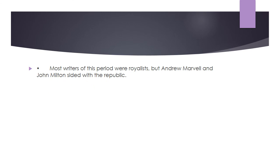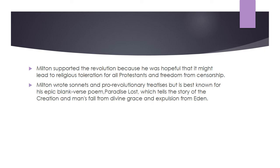Most writers of this period were Royalists, but Andrew Marvell and John Milton sided with the Republic. Milton supported the revolution because he was hopeful that it might lead to religious toleration for all Protestants and freedom from censorship. Milton wrote sonnets and pro-revolutionary treatises, but is best known for his epic blank verse poem Paradise Lost, which tells the story of the creation and man's fall from divine grace and expulsion from Eden.